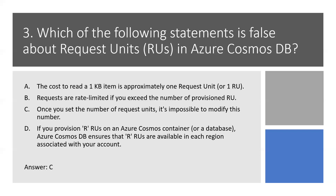As we discussed earlier, we can always scale up or down our RUs based on current demand. So here is the right answer: Option C. You can increase or decrease the number of Request Units provisioned to a container or a database. Option C is the right answer.